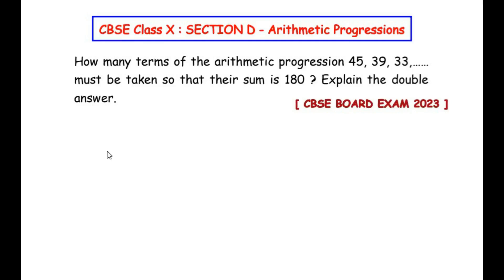Hello and welcome to my channel. In this video we are going to solve a section D question from the arithmetic progressions chapter, which had appeared in the CBSE board exam 2023. The question is: how many terms of the arithmetic progression whose sequence is 45, 39, 33, and so on must be taken so that their sum is 180? Explain the double answer.